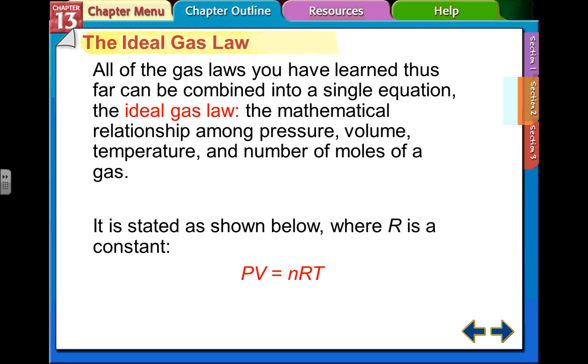And it looks like this. The ideal gas law is the pressure times the volume equals N, which is the number of moles. And this constant is R. It's a constant that we use to make all the numbers come out to be the right units and the right amounts that we want. So this doesn't change.